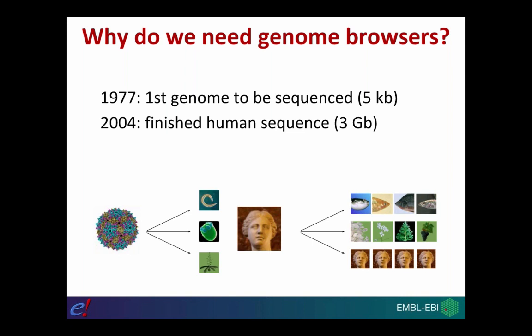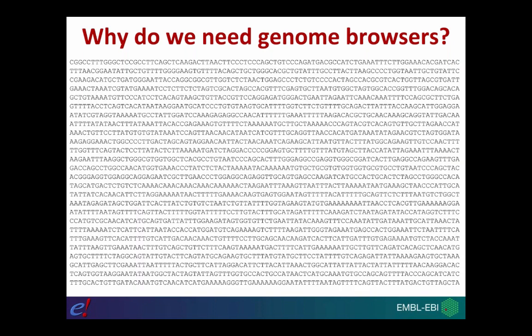In the early 2000s the first draft of the human genome sequence was published and that was three gigabases in size, showing just in those few decades how the increase in technological ability led to the sequencing of much larger genomes. Since then we've had the advent of next-generation sequencing technologies, which has led to lots of different projects aimed at sequencing both many different species on the planet and lots of different individuals within different populations around the world. All of these sequencing efforts lead to the accumulation of a large amount of raw sequence data, and buried within that sequence is lots of important information — genes themselves, features that regulate gene expression like promoters and enhancers, and positions that differ between individuals that might be linked with phenotype and disease.